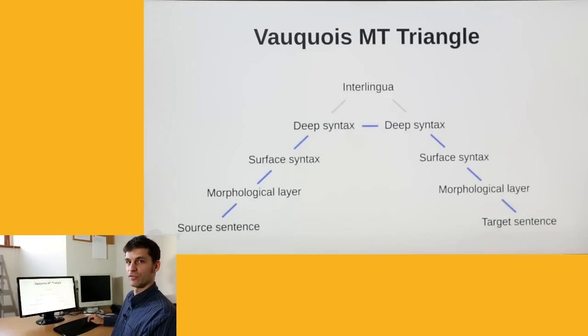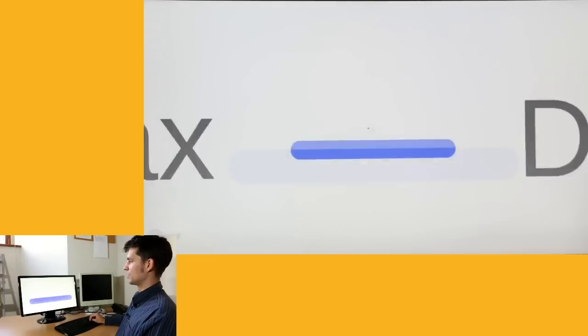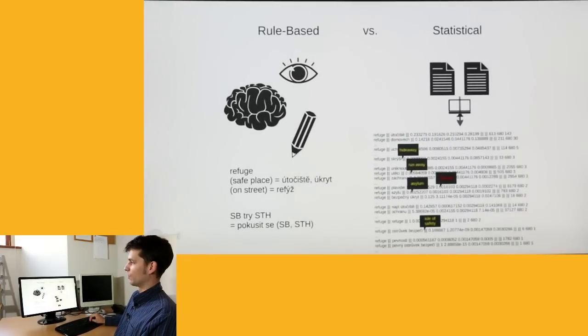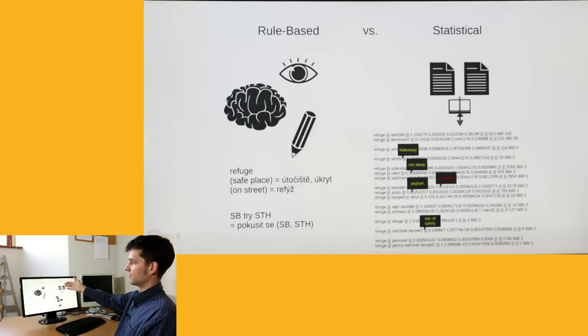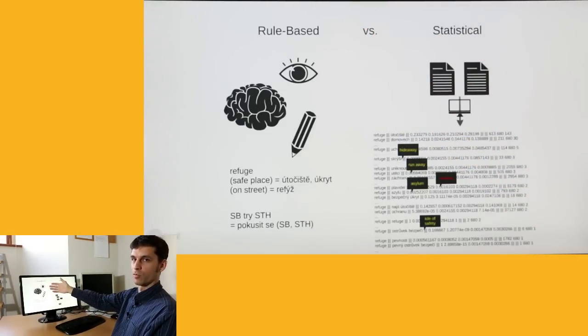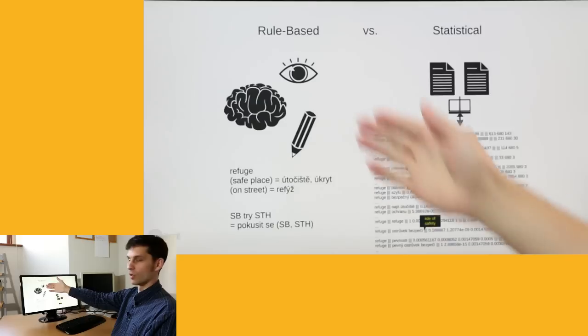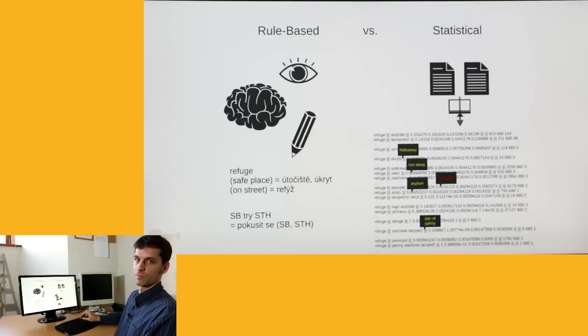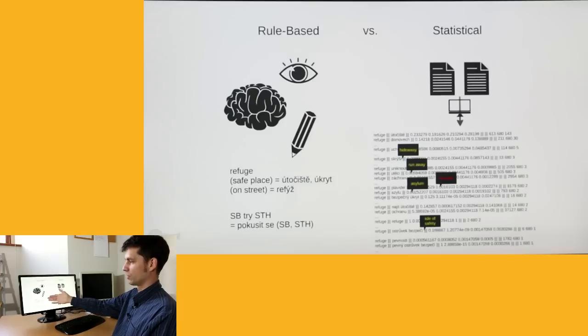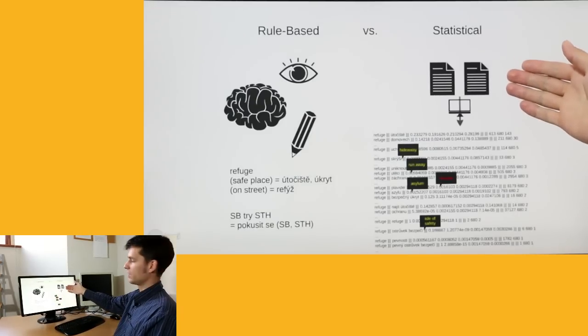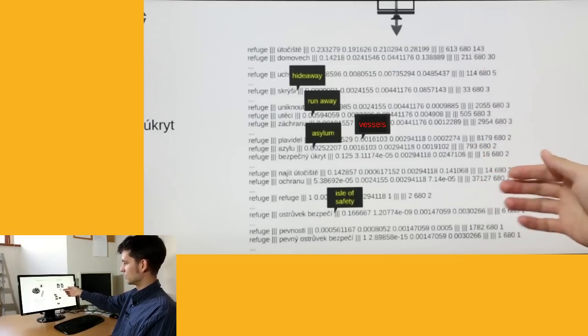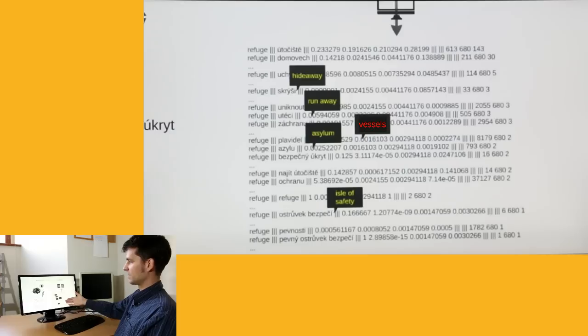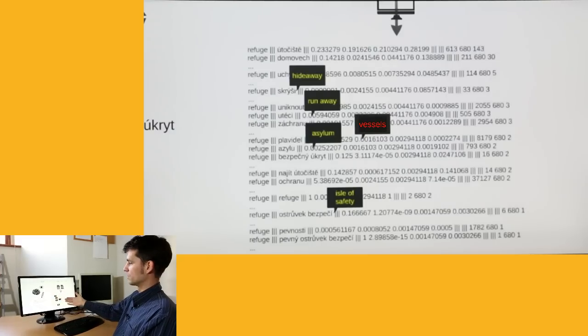Now a completely different level of classification of MT systems is concerned about the internals, whether the systems are so-called rule-based or statistical. Rule-based systems or rule-based components are based on human observations and rules that experts have written in some formal language that the computer understands. Statistical systems, on the other hand, look at vast amounts of data, and the computer processes them to extract various statistics, word co-occurrence counts, and so on.